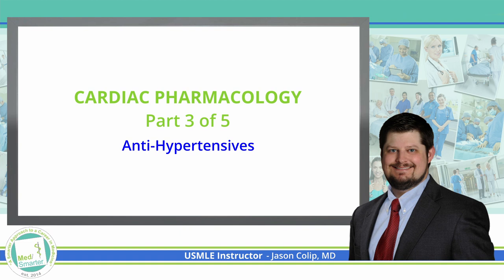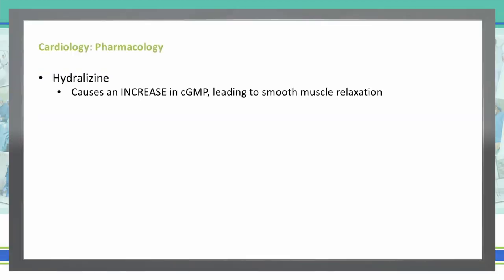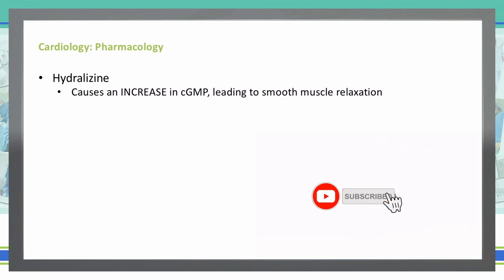Let's continue on and discuss hydralazine. Hydralazine works by causing an increase in cyclic GMP, which leads to smooth muscle relaxation. The increase in cyclic GMP inside the vasculature causes that smooth muscle to relax.